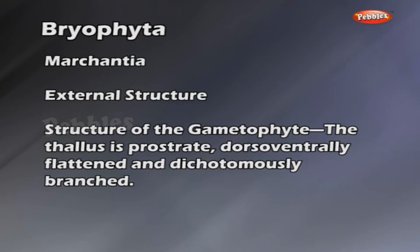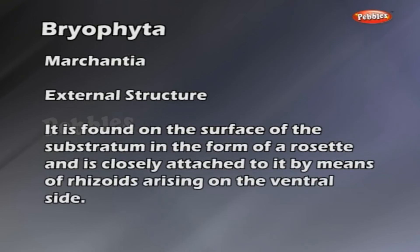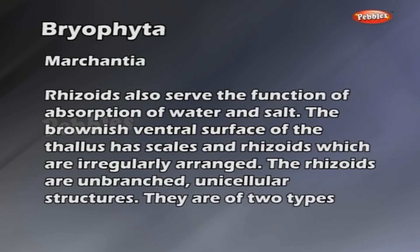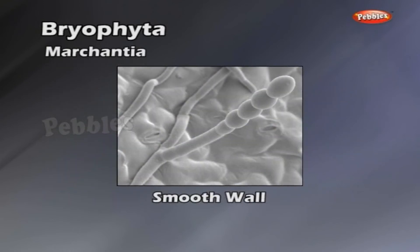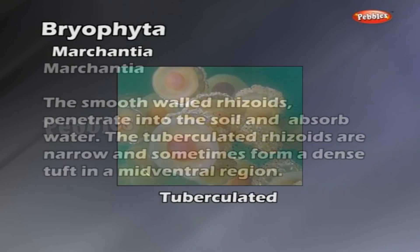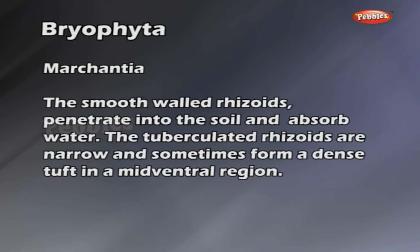Structure of the gametophyte: the thallus is prostrate, dorsoventrally flattened and dichotomously branched. It is found on the surface of the substratum in the form of a rosette and is closely attached to it by means of rhizoids arising on the ventral side. Rhizoids also serve the function of absorption of water and salts. The brownish ventral surface has scales and rhizoids which are irregularly arranged. The rhizoids are unbranched unicellular structures of two types: smooth-walled and tuberculated. The smooth-walled rhizoids penetrate into the soil and absorb water.